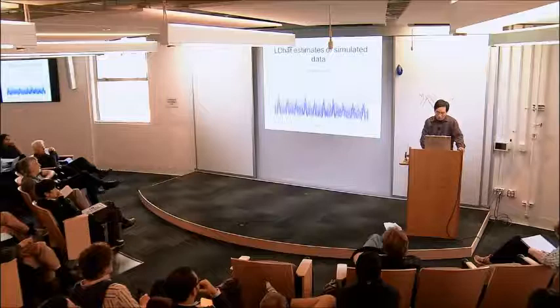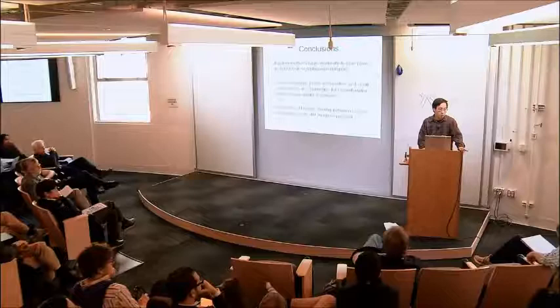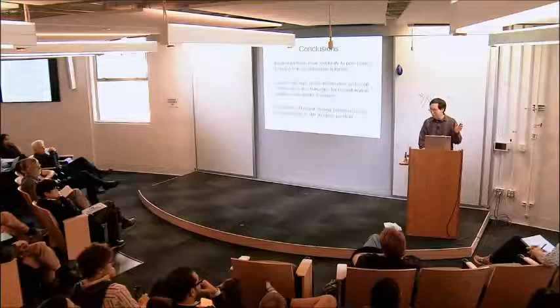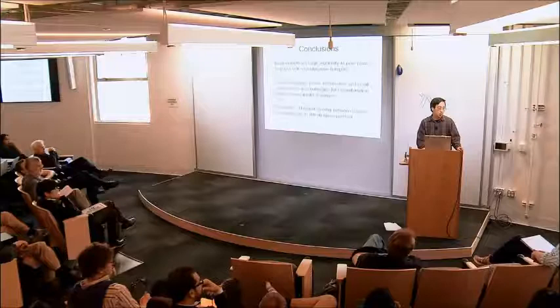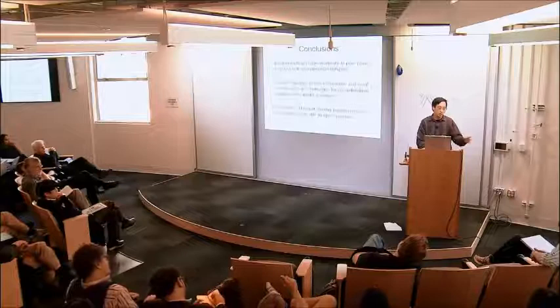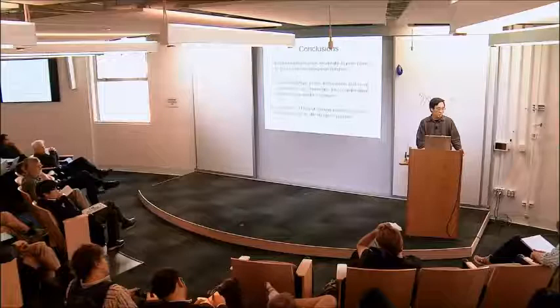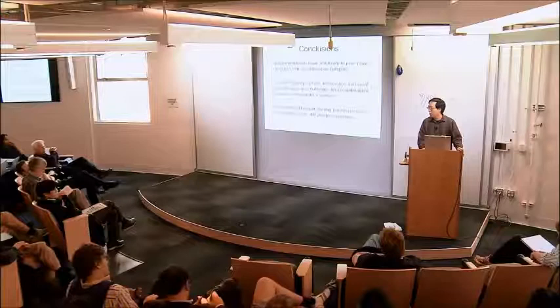How good is LD hat at estimating an average rate over 100 KB versus how good is it at identifying a hotspot? The hotspots were identified primarily because they had a low p-value when compared to null simulations — the LD hat filtering step is secondary. Given that LD hat and LDHOT are using the same composite likelihood, it's a separate question of why their results don't always seem to line up.